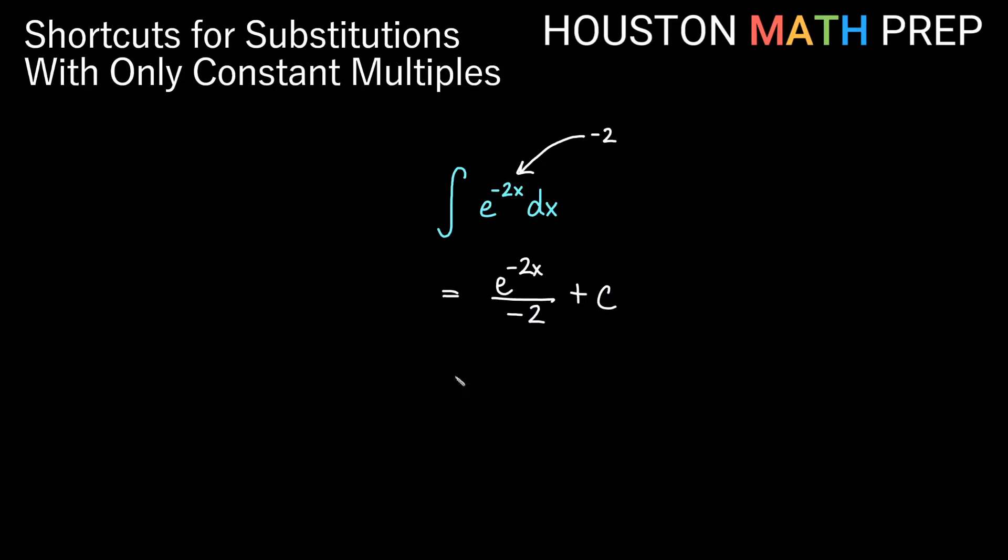And a nicer way to say that I think is probably negative one-half e to the negative 2x plus c. So again, reciprocal of our constant multiple negative 2 came out front and multiplied.